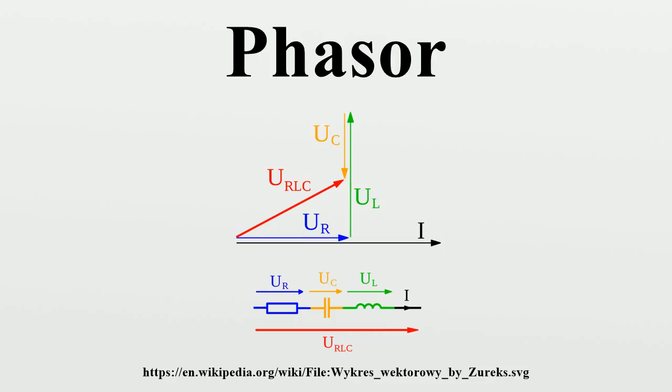In power engineering analysis are three-phase AC power systems. Usually a set of phasors is defined as the three complex cube roots of unity, graphically represented as unit magnitudes at angles of 0, 120, and 240 degrees.